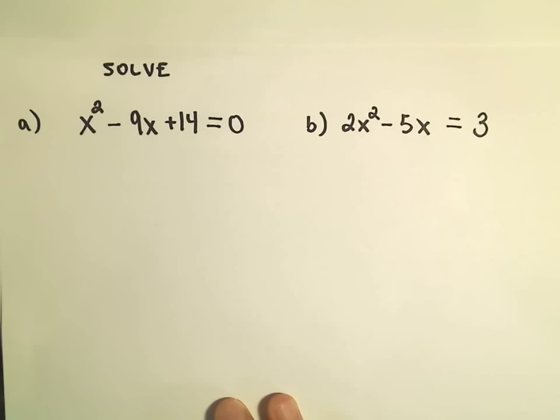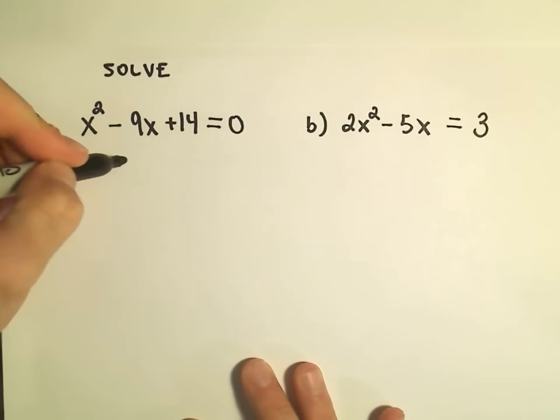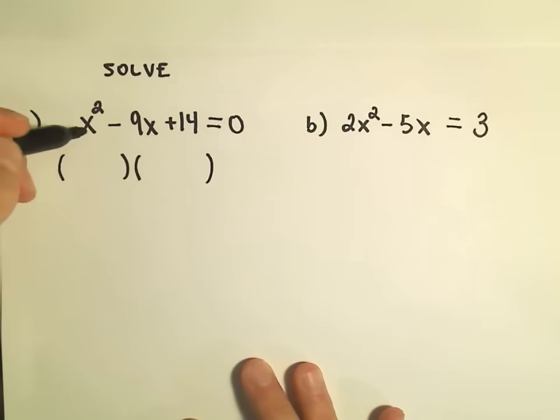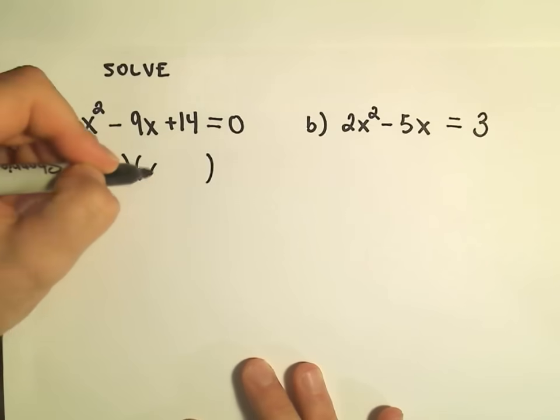But in this one it is set equal to 0, so to me that's good. Since the coefficient on the x squared is a 1, if it factors nicely with whole numbers, I think to get the x squared I would need an x and an x.